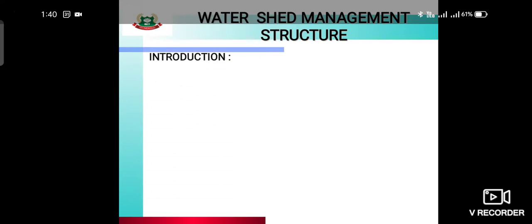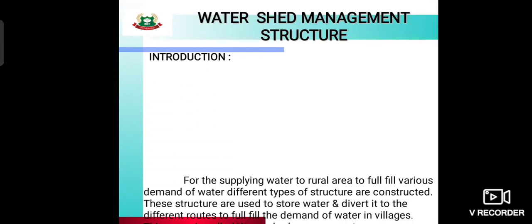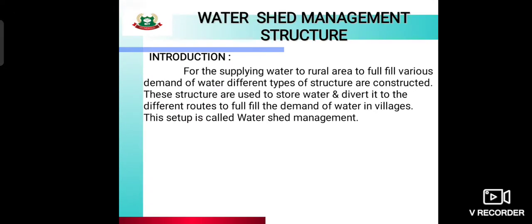Now, watershed management structures: for supplying water to rural areas and filling various demands of water, different types of structures are constructed. These structures are used to store water and divert it to different routes to fulfill the demand of water in villages. This setup is called watershed management.